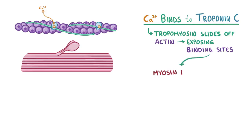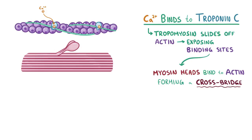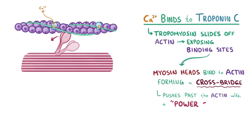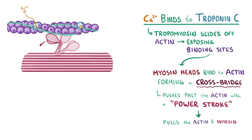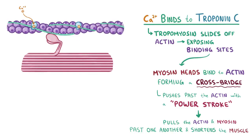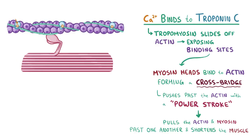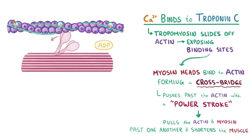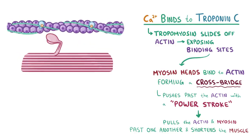At that point, myosin heads bind to actin, and this forms a crossbridge. When the parent's away, the children will play. The myosin head pushes past the actin with a power stroke, effectively pulling the actin and myosin filaments past one another and shortening the muscle. The myosin does this a few times with actin — binding, sliding past, reattaching — and repeating this process, using up ATP along the way.